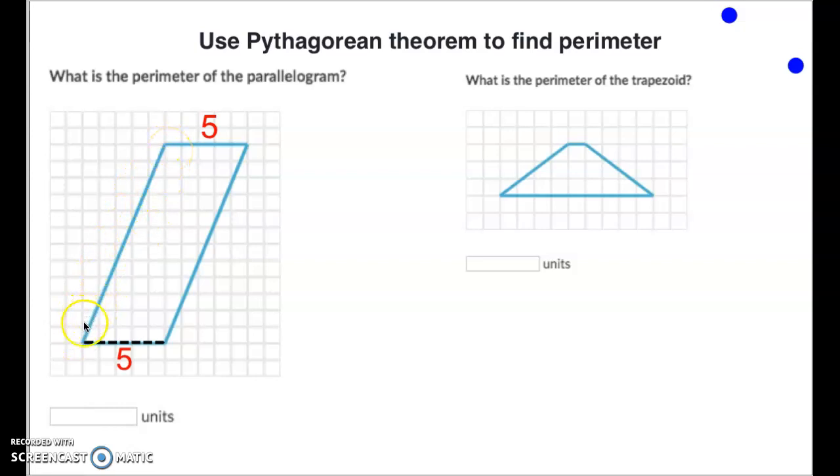But you might notice that if we go from this point down here all the way up to this point up here, this whole thing right here makes a perfect right triangle, meaning we can use our Pythagorean Theorem to figure out the distance of this side.